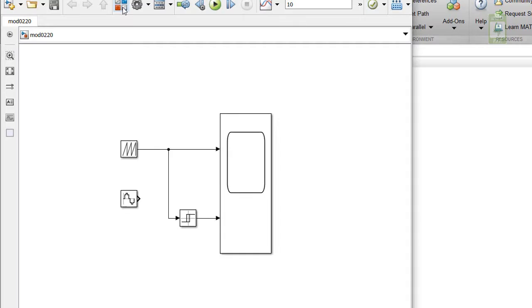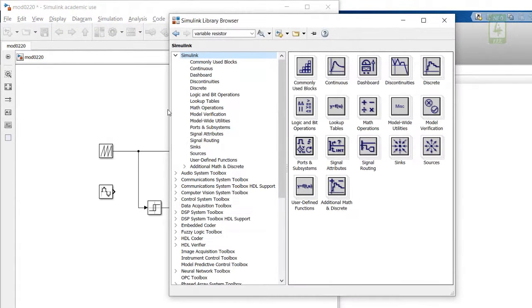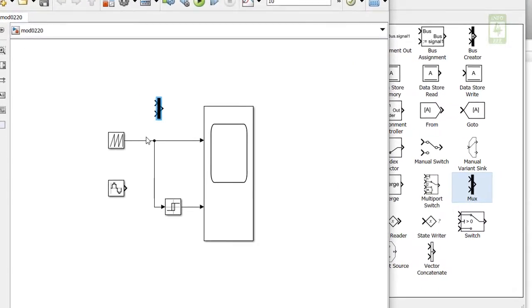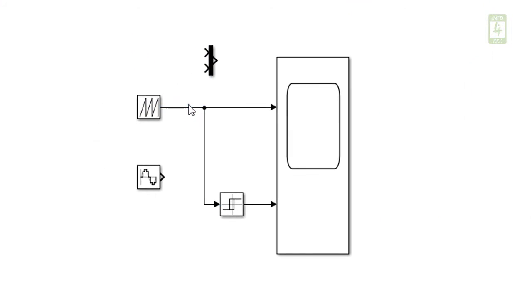Now open Simulink library and drag mux block to simulation file to mux the error and sawtooth wave together. So just disconnect this connection and mux sawtooth wave and sinusoidal error together and connect at first terminal of scope.